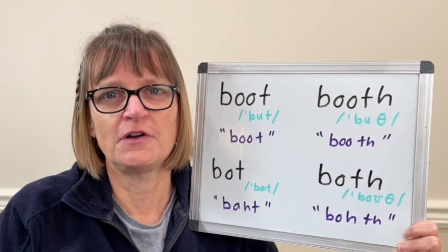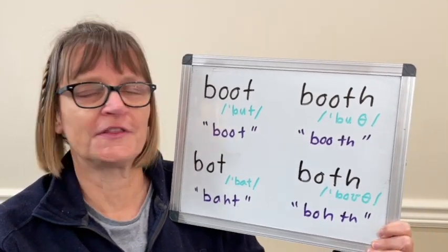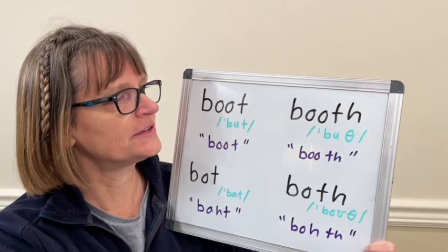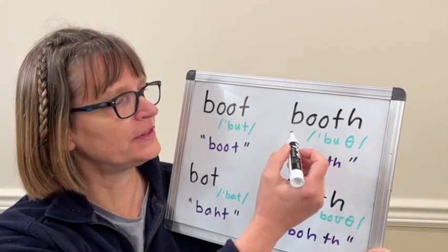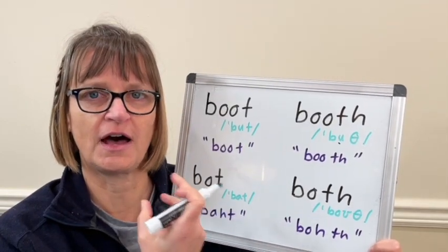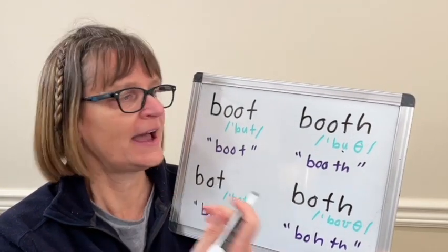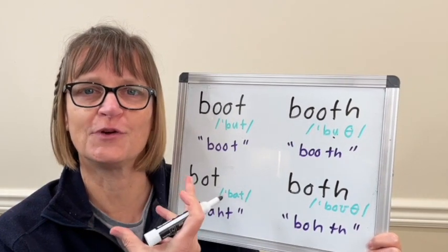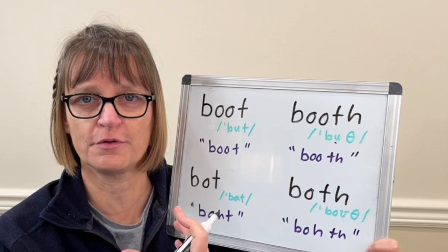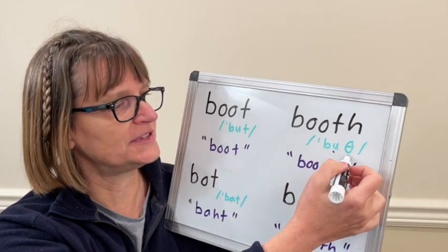First of all, the request that started this or that prompted this video was for the word booth. And so in the word booth, letters OO say the OO sound. It's a tense, high back vowel, OO. And then TH is the voiceless TH, the TH sound like in think or both. And that symbol looks like this, like a theta.